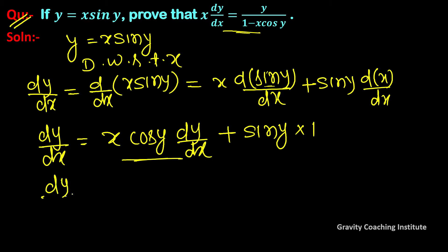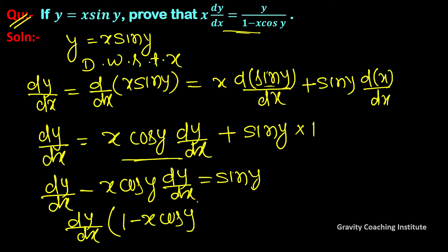Rearranging: dy/dx - x cos y dy/dx = sin y. Factoring: dy/dx(1 - x cos y) = sin y. Therefore, dy/dx = sin y/(1 - x cos y).